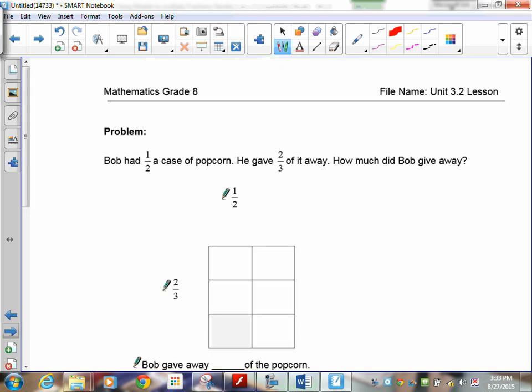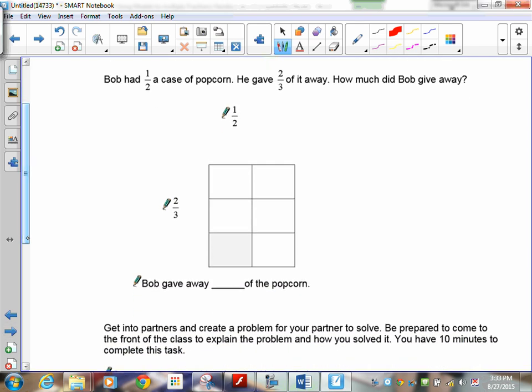This one is all yours. Bob had half a case of popcorn. He gave two-thirds of it away. How much did Bob give away? I'll give you a hint: it's multiply.